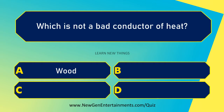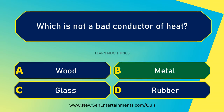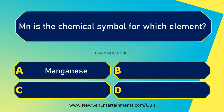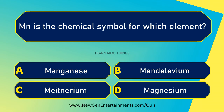Which is not a bad conductor of heat? Metal. Mn is the chemical symbol for which element? Manganese.